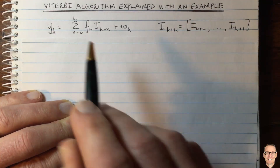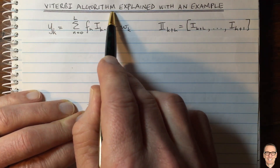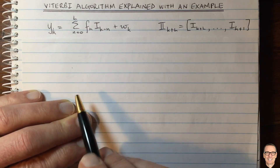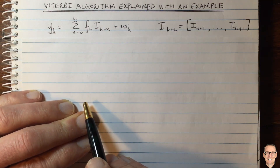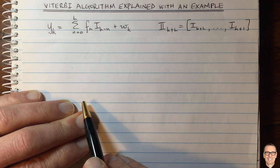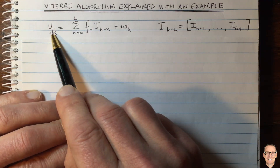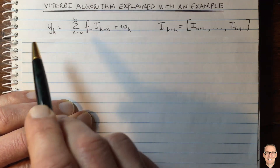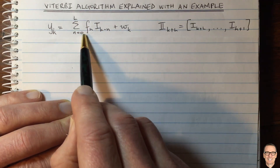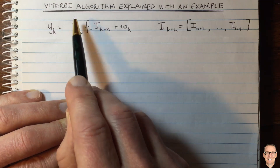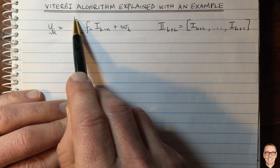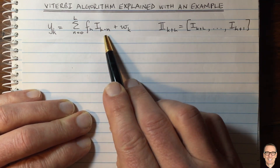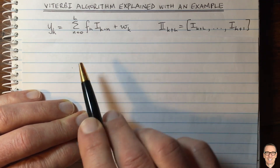I'm going to use an example to explain the Viterbi algorithm, and I'm going to choose an equalization example, but it holds equally well for decoding of convolutional codes. Here's an equation for the output of a channel when there's inter-symbol interference. In this case, we've got the direct path when n equals 0, and then L taps of inter-symbol interference. For more information about inter-symbol interference, check out the description below this video.